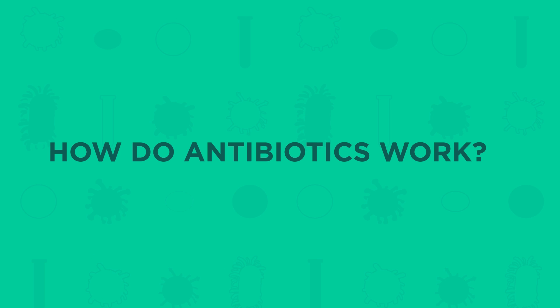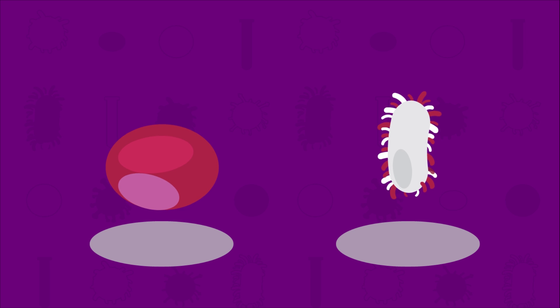So how do antibiotics actually work? Antibiotics affect specific parts of bacterial cells which human cells don't have. They stop the bacterial infection but do not harm the human cells.